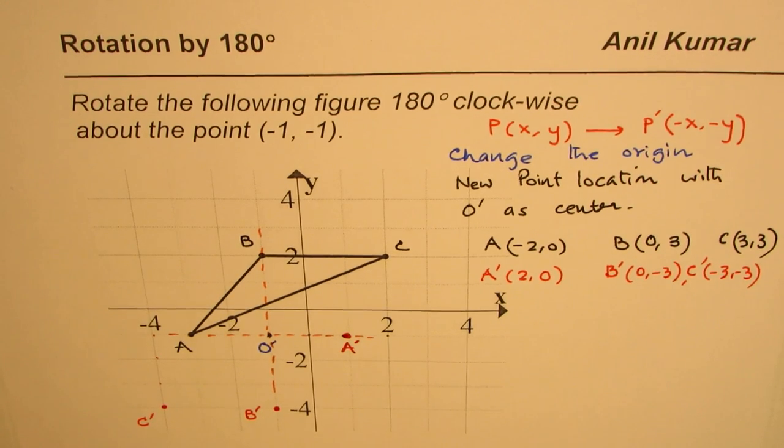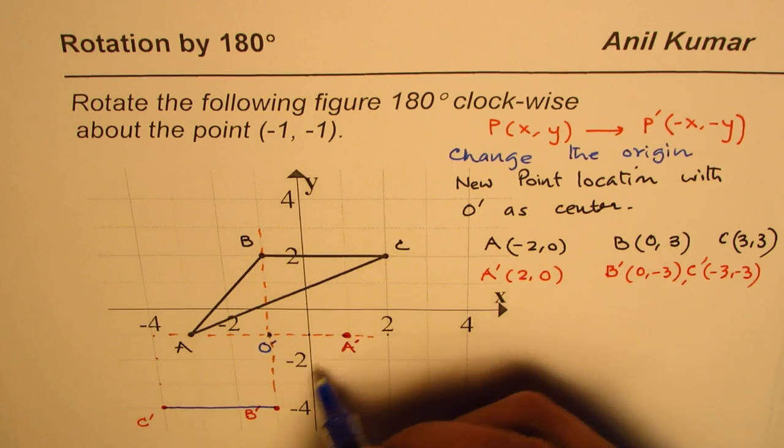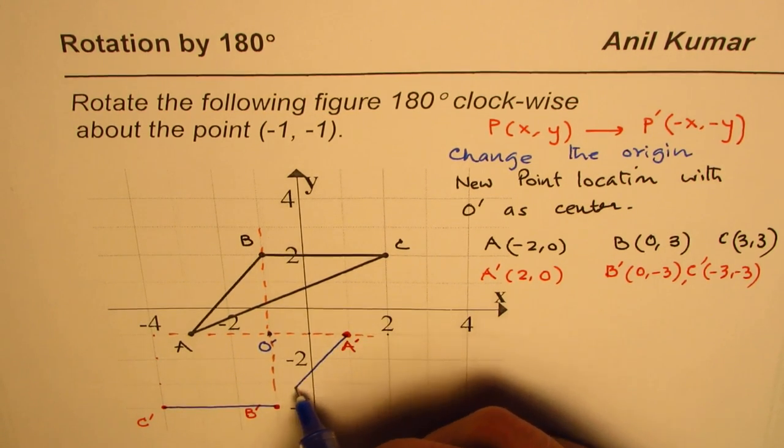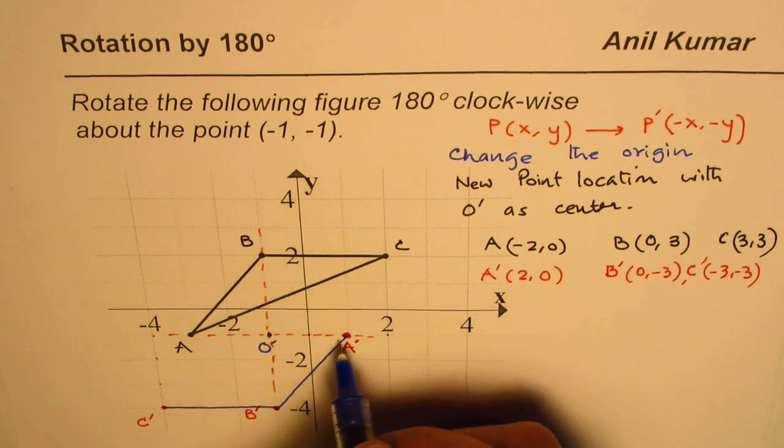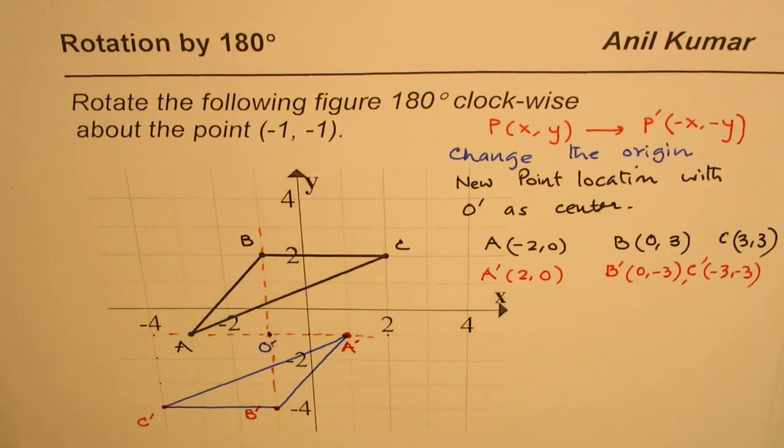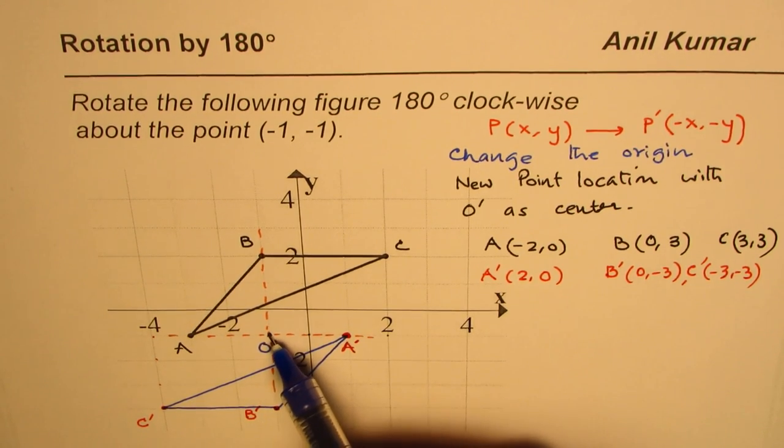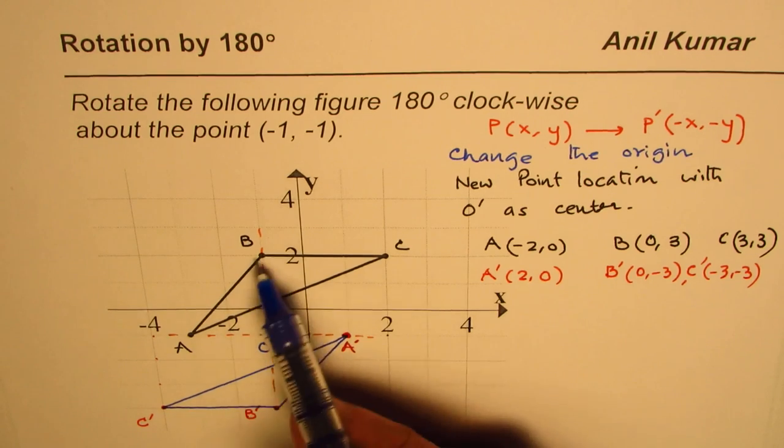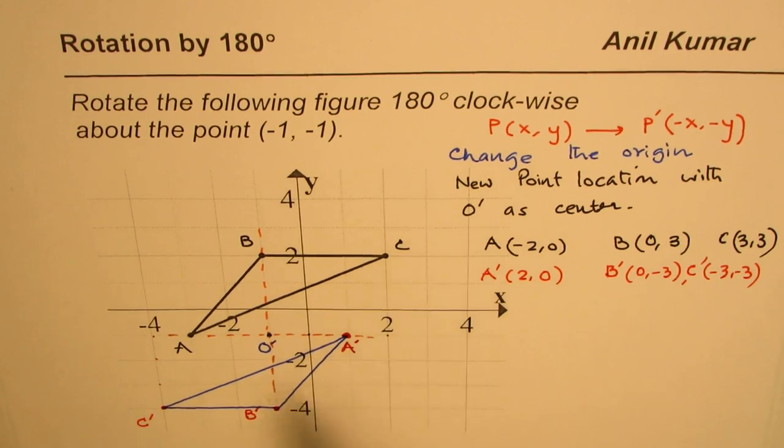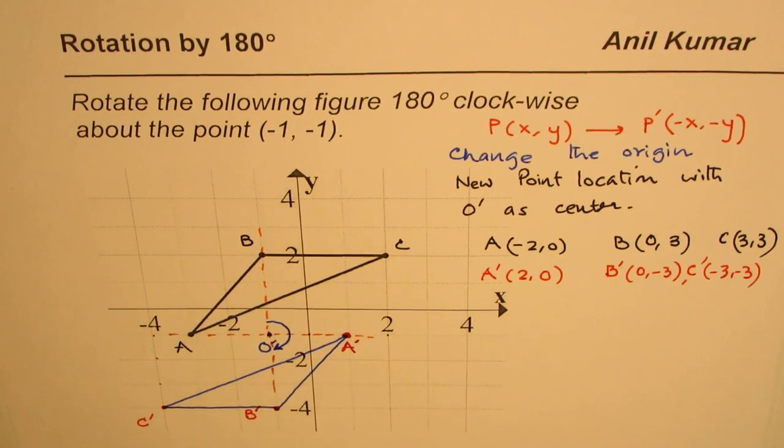Let us join these points—C', B', A'. You should use a proper scale to join them so that you get better lines. I'm just doing it approximately. Now you can see, with reference to this point, the whole image has been rotated 180 degrees clockwise. That is how